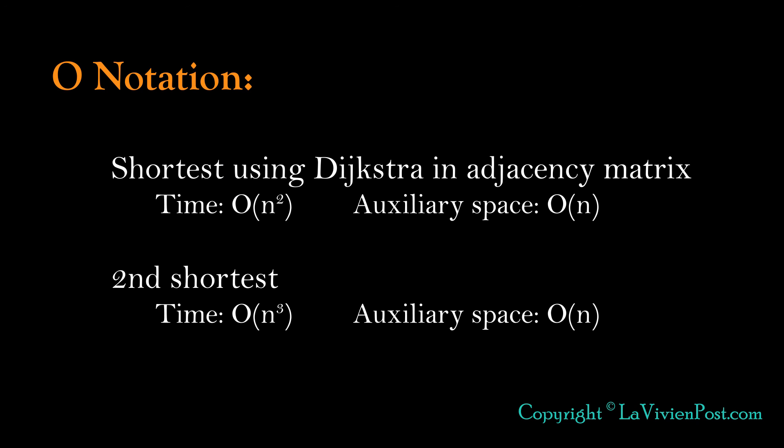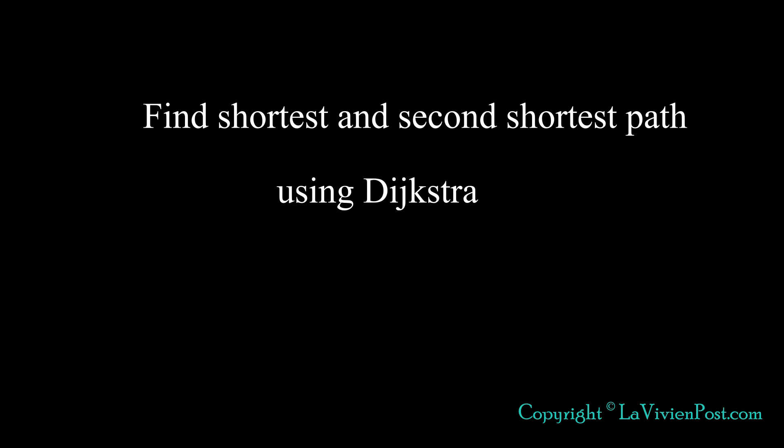The time complexity of shortest path using Dijkstra is O(n²). The space complexity is O(n) in addition to the original matrix space. To get the second shortest path, we have another loop. The time complexity is O(n³). Space complexity is still O(n). That's it for find shortest and the second shortest path using Dijkstra.